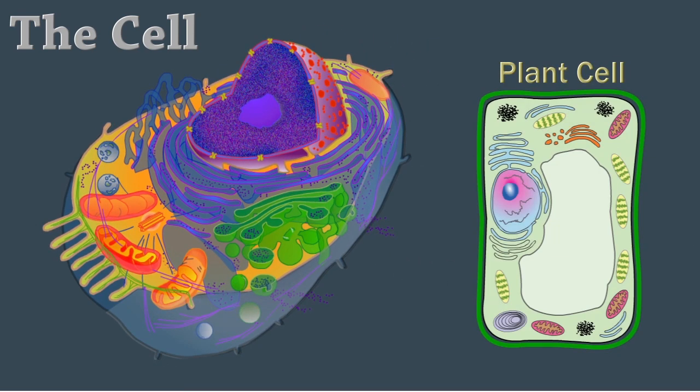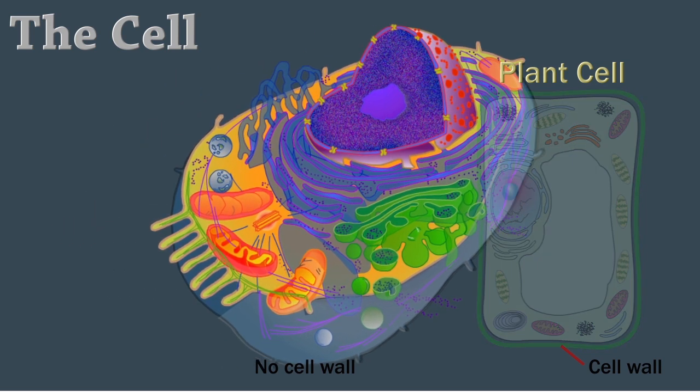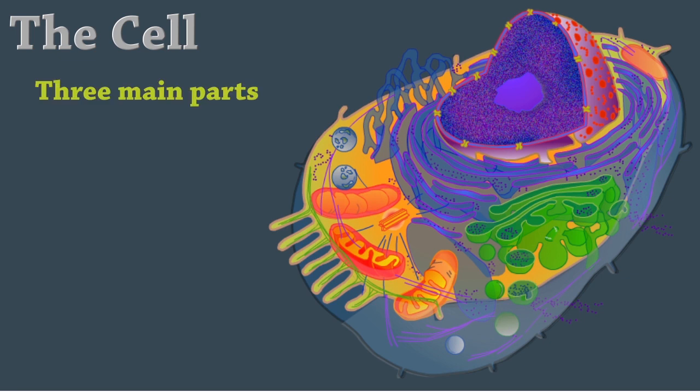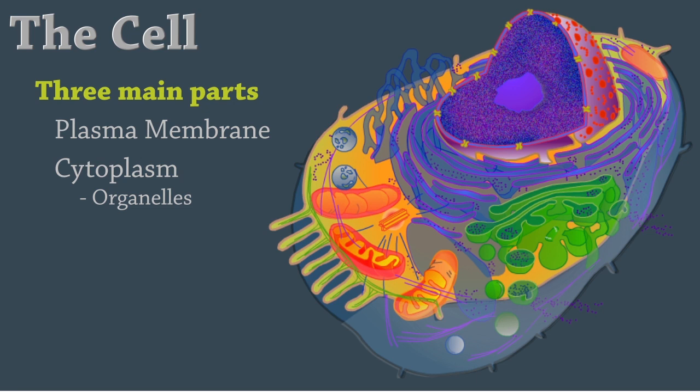Unlike plant cells, animal cells lack a cell wall, so they come in a variety of shapes and sizes. All animal cells have three main parts: the plasma or cell membrane, the cytoplasm which contains the organelles, and the nucleus.